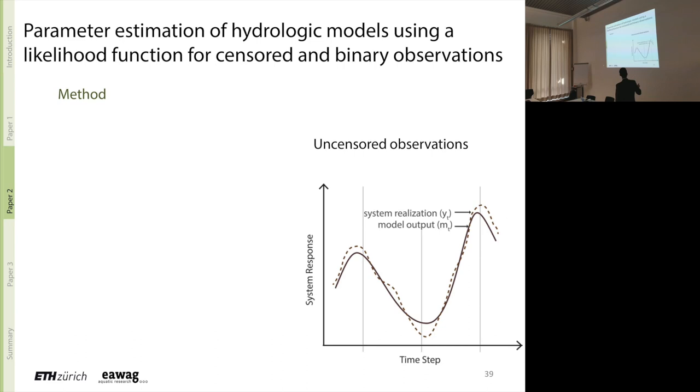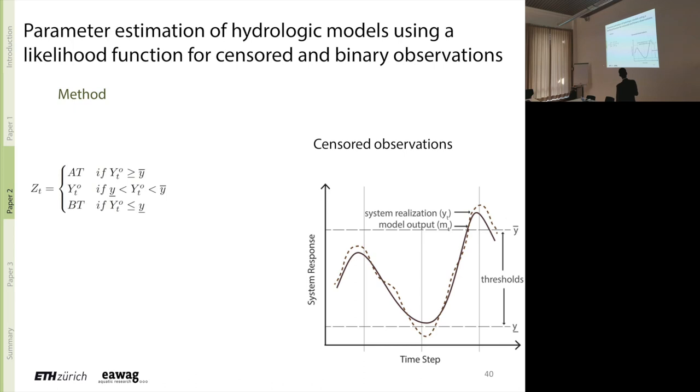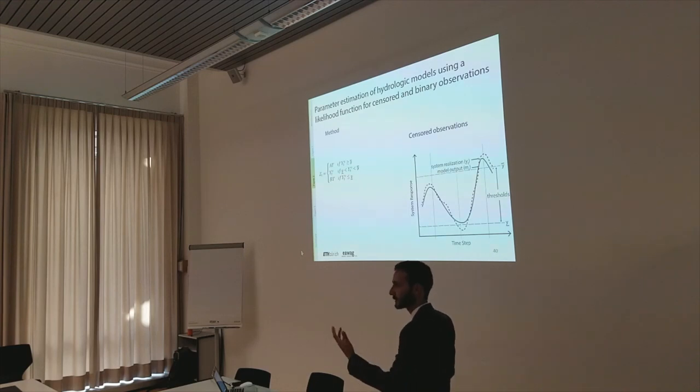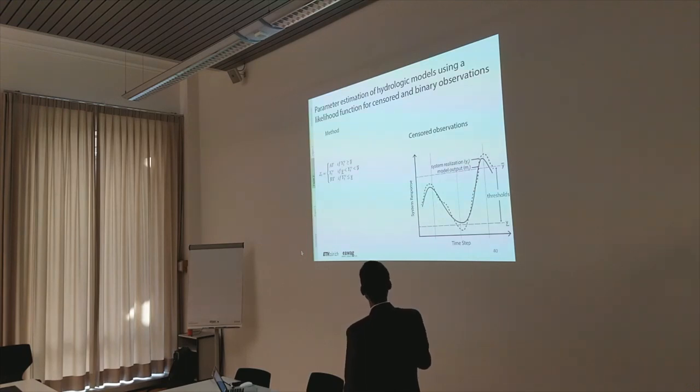Defining sensor observations. Model predicting the system response. Then the system response would turn out to be different than what your model predicted. And if you have measurements at different time slices of this exact physical realization, that would be uncensored observations. If your sensor is not able to capture the exact value of the system response above or below a threshold, all it tells you that the system went above a threshold, like the banks of the river overtopped, or in a drainage system something overtopped the network. That information then would be censored. So AT would be above threshold. BT would be below threshold. And this is what we call sensor observations.